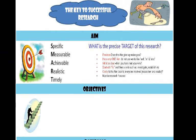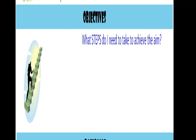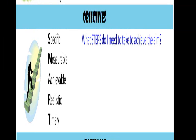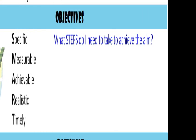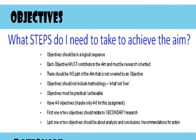Once we have a very clear, precise target for our research, we can break that down into smaller steps — objectives. Objectives are the steps that you will need to take in order to achieve your aim. Again, the acronym SMART is quite useful, so do bear each of these points in mind when you're writing your objectives. The objectives should be in a logical sequence — the order in which you will have to do the work to achieve your aim. Each objective must contribute to the aim and must be research orientated.